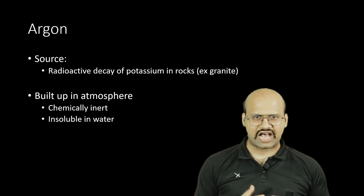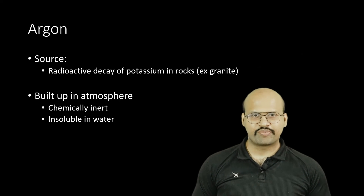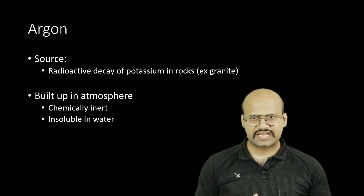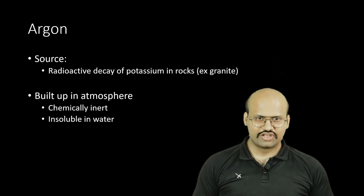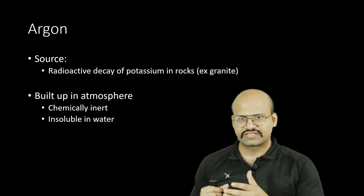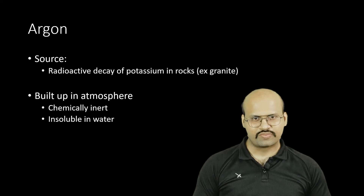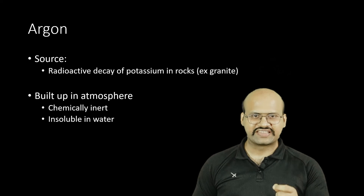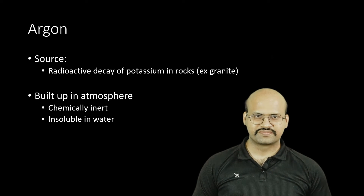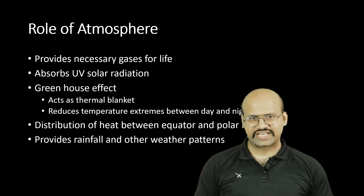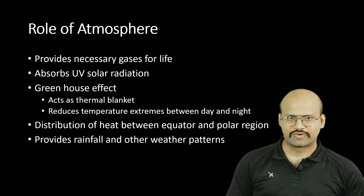Argon is emitted by potassium, which is found in rocks such as granite. It is chemically inert and insoluble in water. So even though it is released in very small amounts, because it is chemically inert and insoluble in water it stays in the atmosphere, and therefore argon is around 0.93% of our atmosphere.